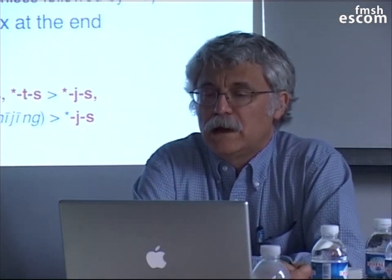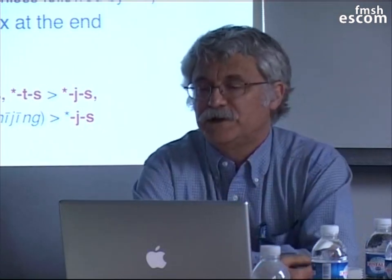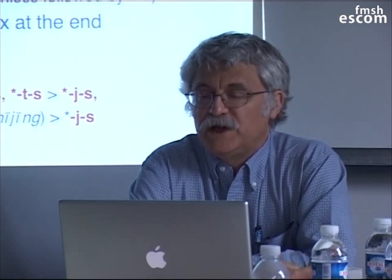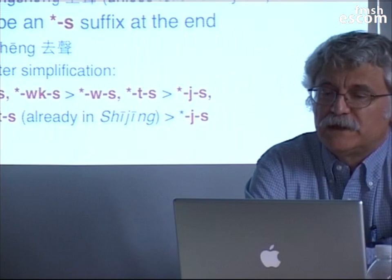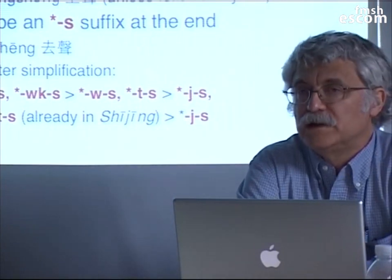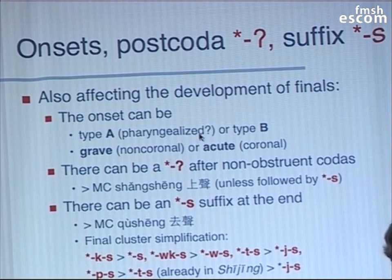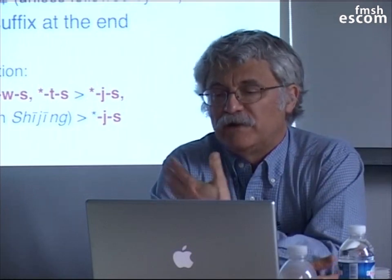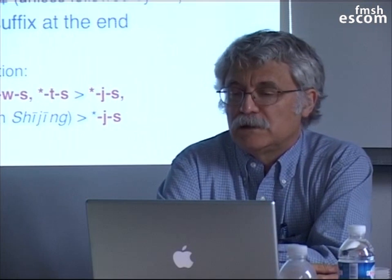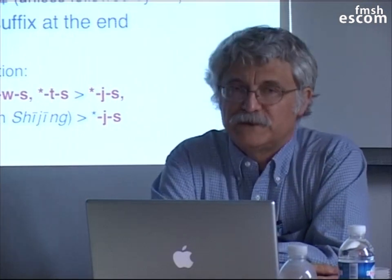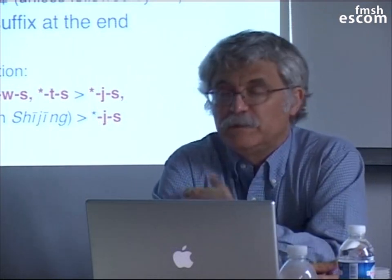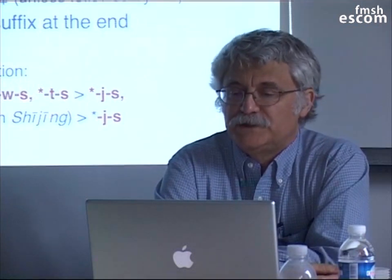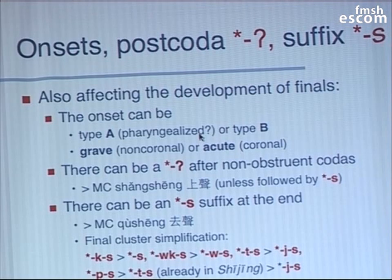In addition to that, here are some of the other things outside those units that affect the development of the finals. The onset can be type A, which we think may be pharyngealized, or type B. It also makes a difference whether the initial is grave or acute — that is to say, non-coronal or coronal — because the vowels often develop differently depending on what kind of initial consonant you have. There can also be this post-coda glottal stop after non-obstruent codas, and that's what gives us the Middle Chinese shang shang, unless it's followed by S, and S trumps that.